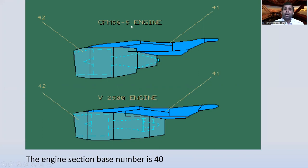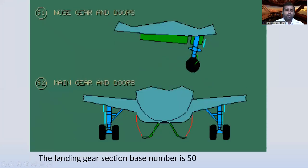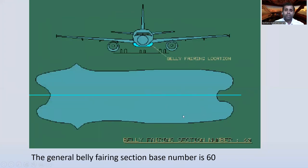For the CFM56-5 engine, the pylon is 41 and the engine is 42. For the V2500 engine it is also 41 or 42 — the same. The landing gear section base number is 50: nose landing gear doors are 51, and main gear and doors are 52. The general belly fairing section base number is 60. You can see the belly fairing location and its section number is 60.